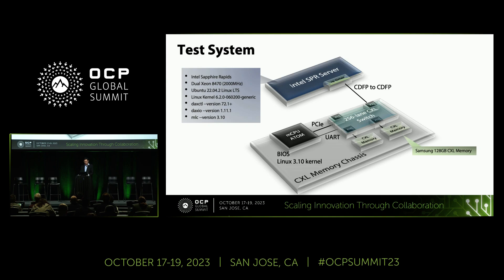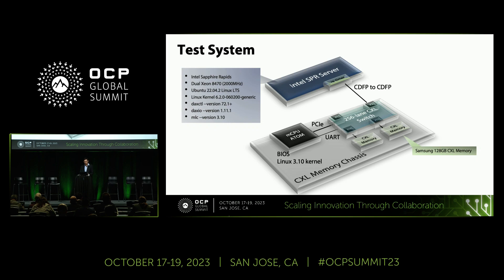We set up the testing system using Intel Sapphire Rapids servers. We placed a retimer on the CXL slot and ran a CXL cable to the CXL switch, with a Samsung 128 gigabyte CXL memory module installed in the switch. On the software side, we used Ubuntu LTS 20.04, Linux kernel 6.2, and Intel Memory Latency Checker 3.1 — that was the software environment.